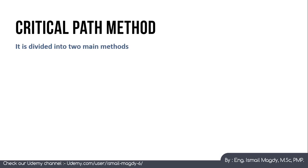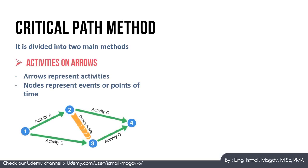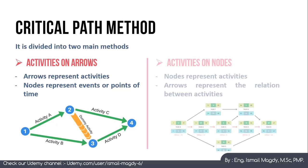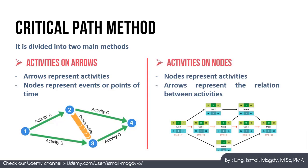The second method we will learn today is the Critical Path Method, which is divided into two main types. The first is Activities on Arrows, where arrows represent activities and nodes represent events or specific points in time. The second is Activities on Nodes, where nodes represent activities and arrows show the relations between them — this is the more commonly used method.